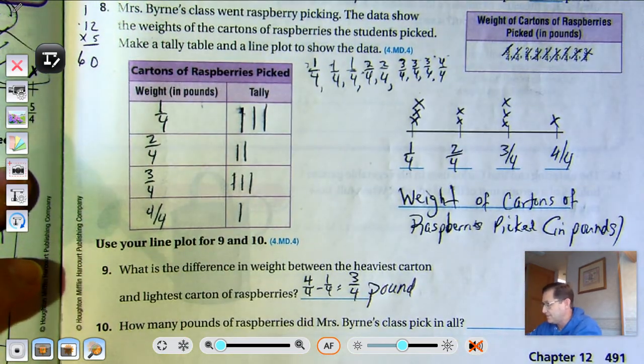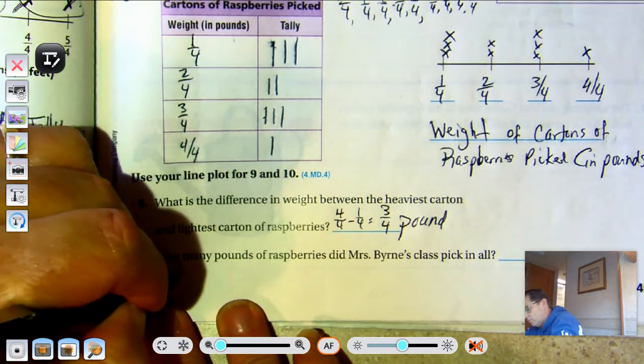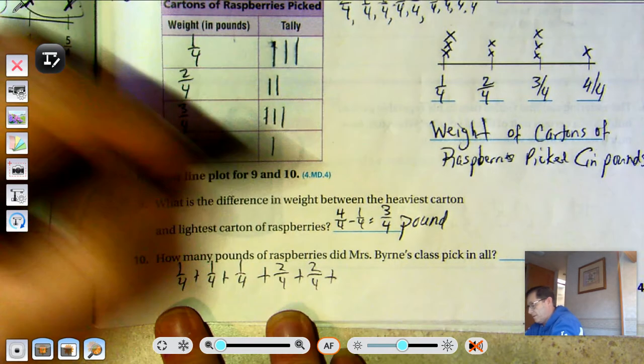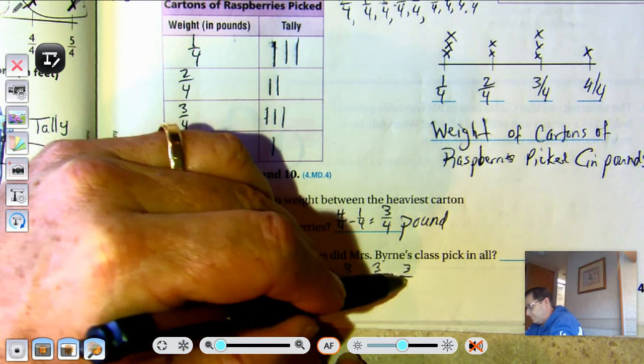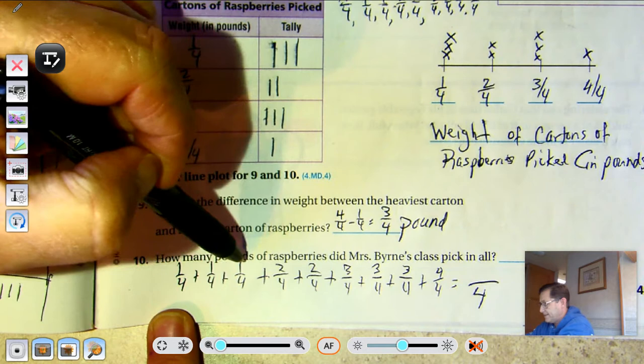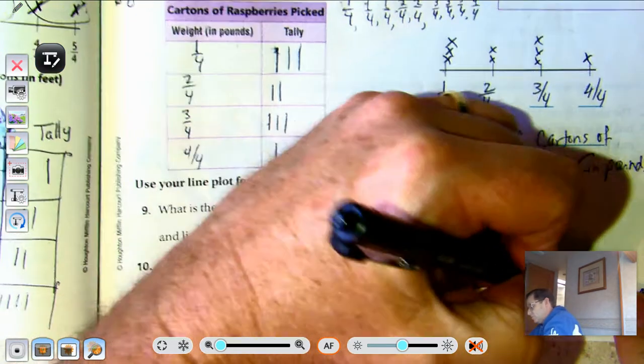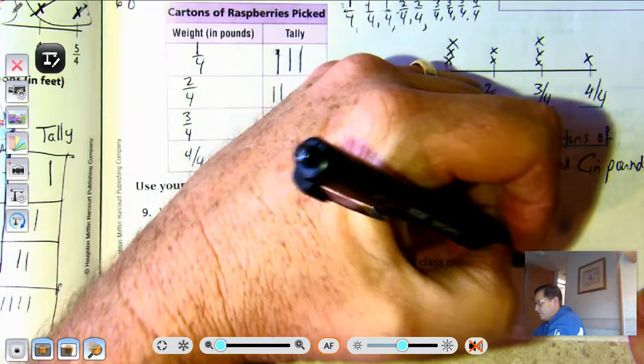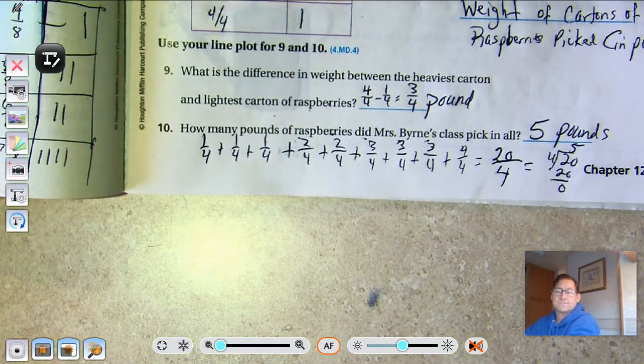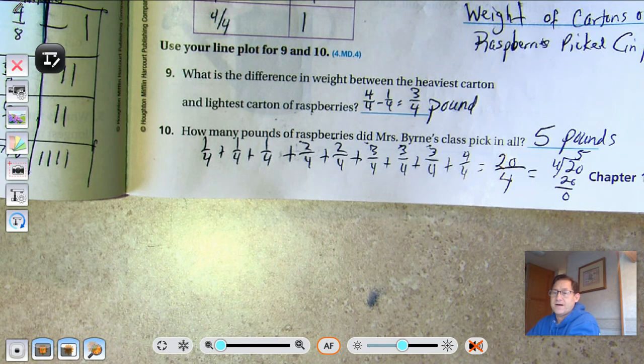How many pounds of raspberries did Mrs. Byrne's class pick in all? This is just going to be an addition problem - we add up all the numbers we have. One-fourth plus one-fourth plus one-fourth plus two-fourths plus two-fourths plus three-fourths three times plus one four-fourths. For a total of 3, 5, 7, 10, 13, 16, 20 fourths. 20 divided by 4 is 5. There's no remainder, so 5 pounds of raspberries.